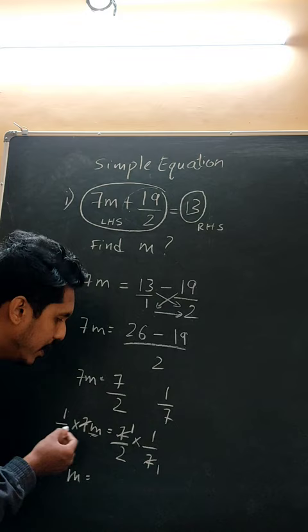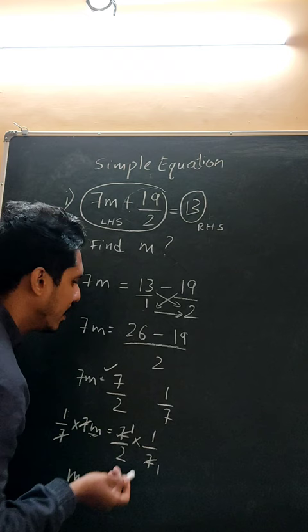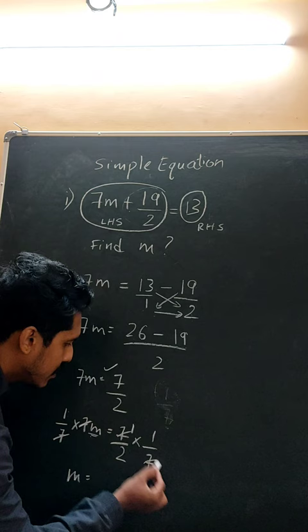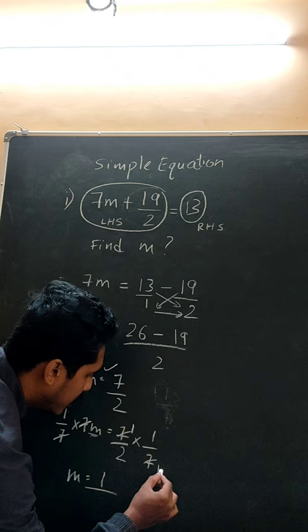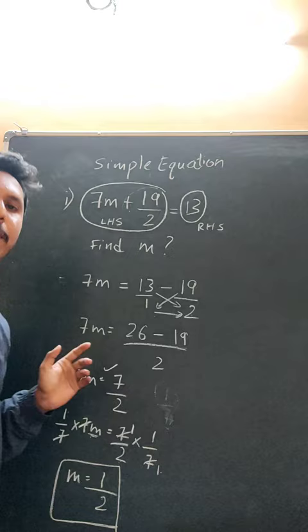After cancellation, only m remains on the LHS. The 7s cancel, 1 ones are 1, so 1Z is just m. The denominator 2 ones are 2 stays. So the value of m is equal to 1 by 2. This is the easiest method which you can learn.